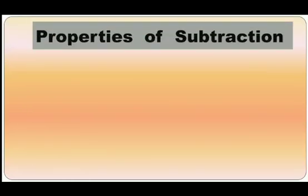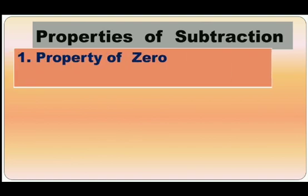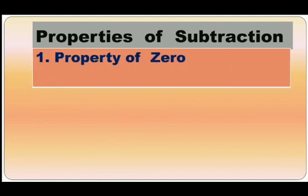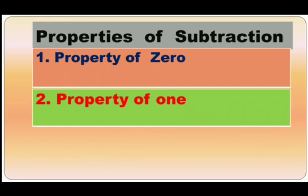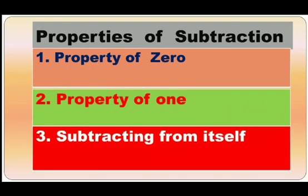Now, let us understand the properties of subtraction. First, property of 0. Second, property of 1. Third, subtracting from itself. Let us know more about these properties one by one in detail.